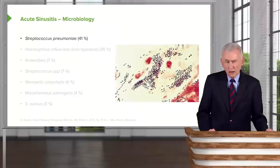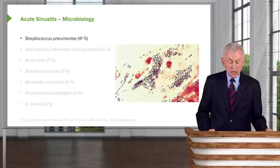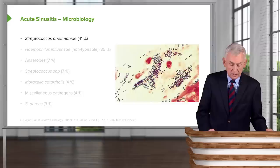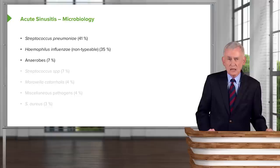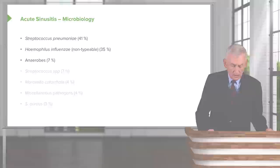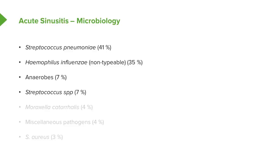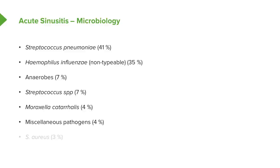The microbiology of sinusitis reflects the upper respiratory tract flora. Streptococcus pneumoniae is the most common cause of bacterial sinusitis, followed closely by Haemophilus influenzae. Anaerobes are not a common cause unless the patient has chronic blockage of the ostia. Moraxella catarrhalis has a low incidence in adults but a much higher incidence in children. Miscellaneous pathogens and Staphylococcus aureus account for the rest.